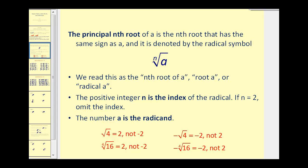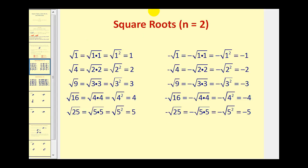Let's take a look at several examples of square roots and cube roots. Here we see several square roots where n is equal to two. Remember, if n is two, they omit the index — I'm going to write the index in for a few of these. The square root of one is the number squared that equals one. Since we can write one as one squared, the square root of one is equal to one. Since we can write four as two squared, the square root of four is equal to two. When the index is two and the exponent is two, they basically undo each other because square rooting and squaring are opposite operations. We're looking for perfect square factors.